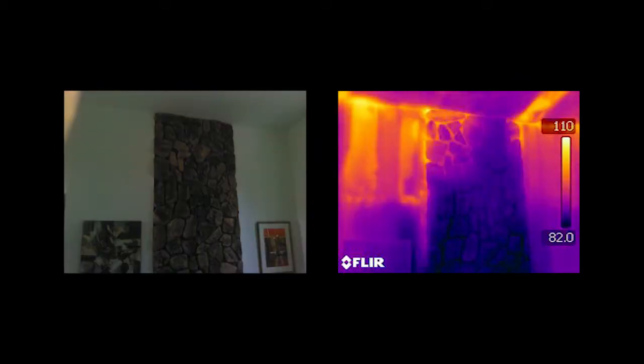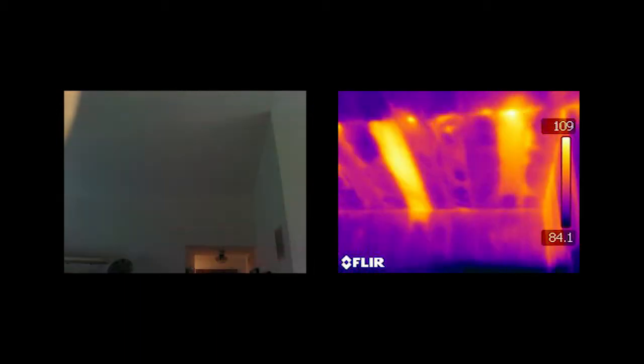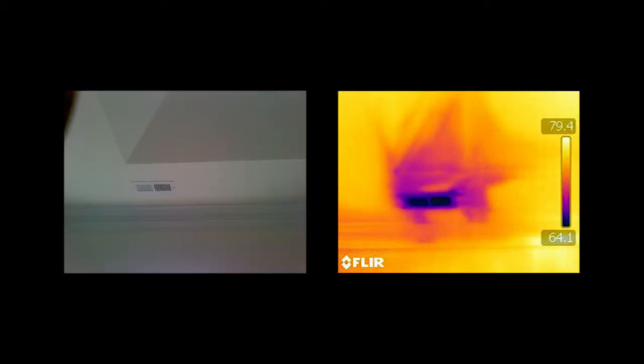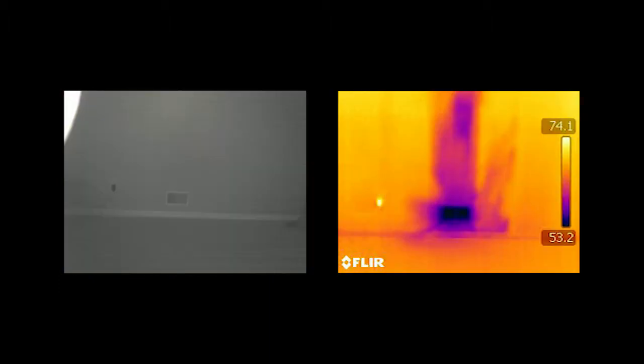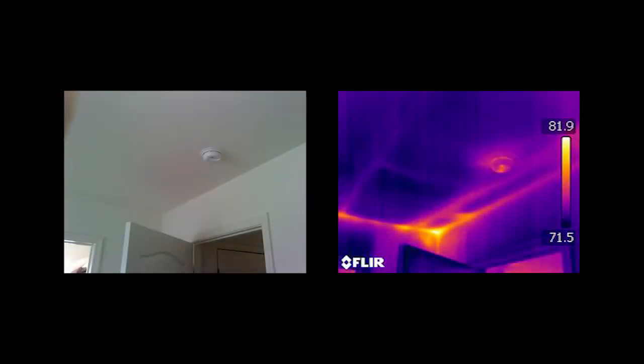Insulation anomalies are common in construction, both new and old. Infrared thermal imaging allows us to effectively scan the home and identify areas that are improperly or incompletely insulated.